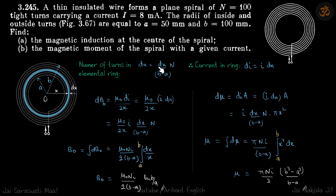These are the number of turns. The current in this loop going around is i times number of turns, so di elemental current is i dn. Now we can calculate our field and magnetic moment.